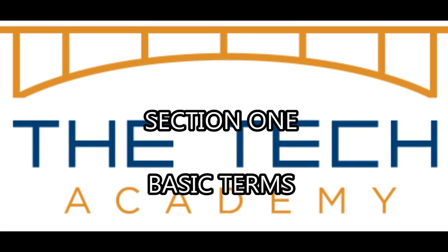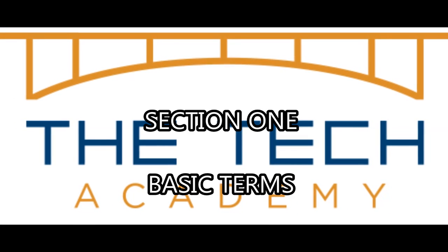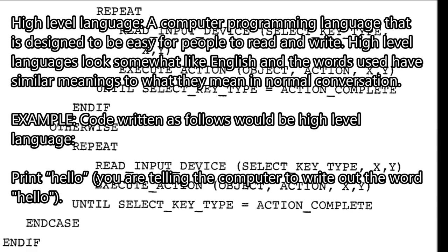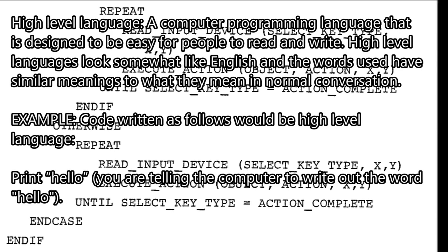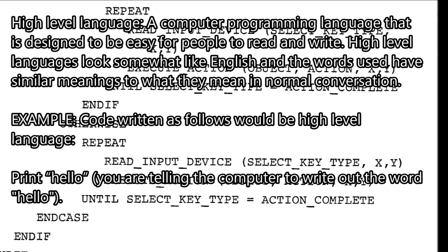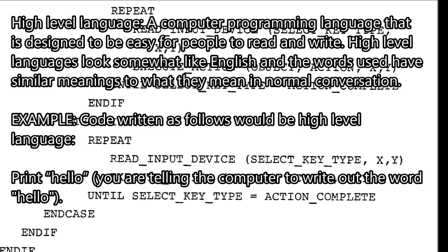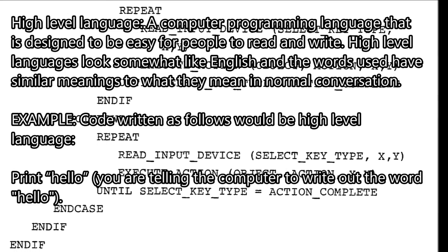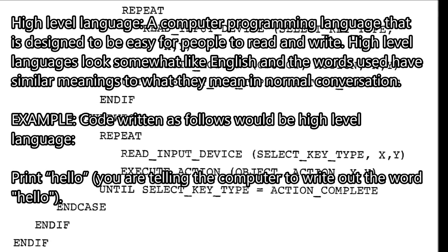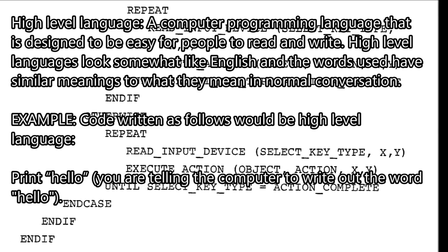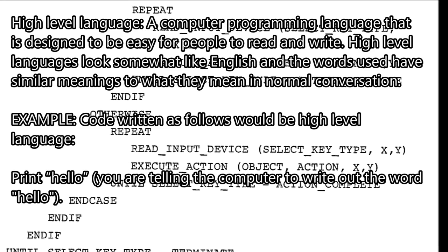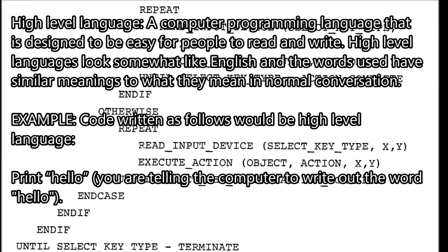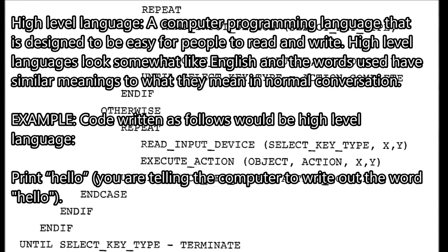Section one: basic terms. High-level language — a computer programming language that is designed to be easy for people to read and write. High-level languages look somewhat like English, and the words used have similar meanings to what they mean in normal conversation. For example, code written as 'print hello' would be high-level language — you are telling the computer to write out the word hello.